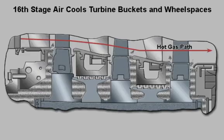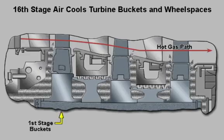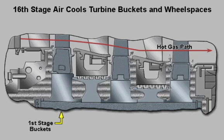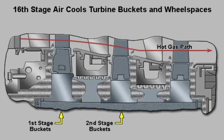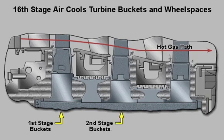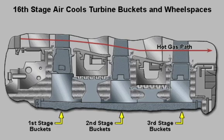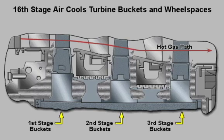In the turbine section, the extracted air cools the first and second stage turbine buckets. Cooling air also flows through the second stage aft side wheel space and the third stage forward side wheel space.